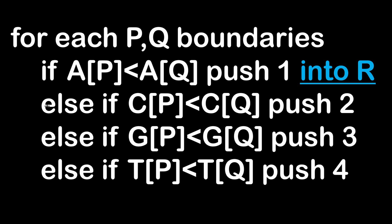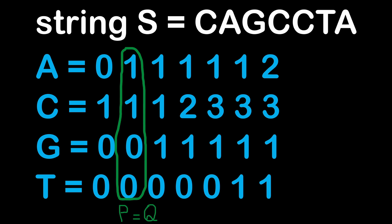For each couple of values P and Q, we test if A's cumulative differs between positions PI and QI. If so, we push the impact factor 1 into results vector R. If not, we check letter C in an else-if, pushing 2 if different, and so on for G and T. It's critical to preserve the order of increasing impact factors. There is also an edge case: if PI equals QI, we simply look at the single character at that position in string S and push its impact factor directly.